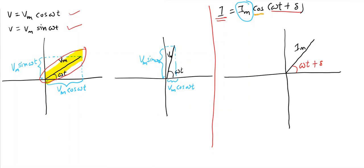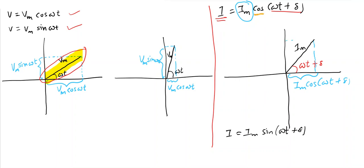If current is a function of cosine, I have to take the horizontal component of Im, because the horizontal component is the cosine component. And if in some circuit the current is i = Im sin(ωt + δ), the same phasor can deal with it — instead of horizontal, look at the vertical component, which is the sine component. As time changes, this phasor will rotate and hence its horizontal and vertical components will change value.